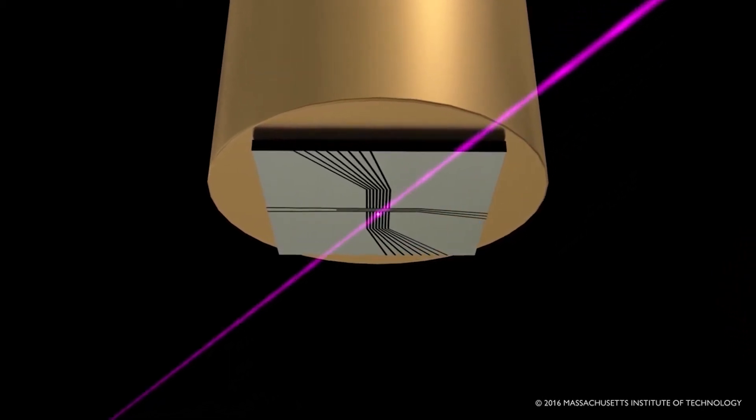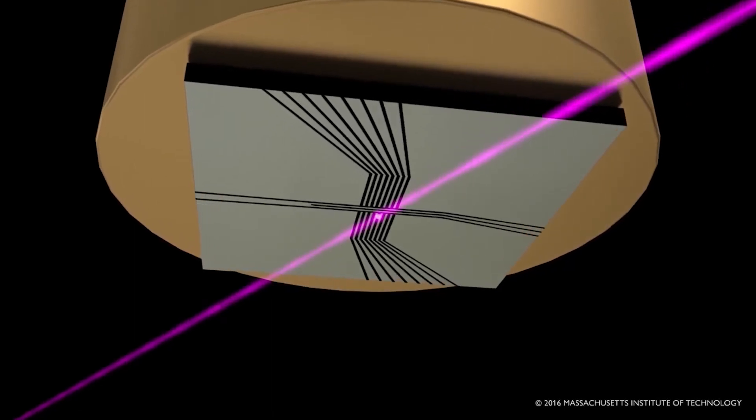Trapping fields are produced below the chip by applying electric fields to the patterned electrodes on its surface.